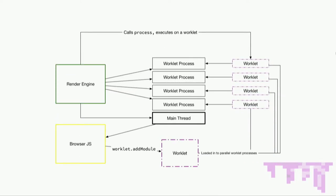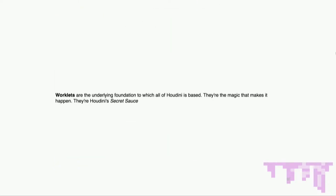It looks like this. We have our render engine and our main thread. From that main thread, we have our browser JavaScript, which registers our worklet. That worklet gets loaded into the main worklet threads — however many, however parallelized. The main thread is a separate process from the worklet threads. When our render engine wants to use something from a worklet, it calls the worklet's process directly into that worklet thread. Our browser JavaScript never touches the stuff in the worklet thread once it's loaded. Worklets are really the underlying foundation for all of Houdini — Houdini's secret sauce.